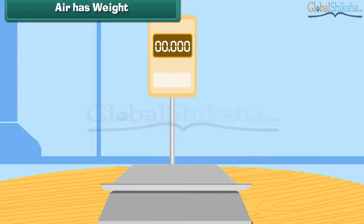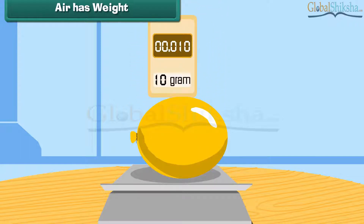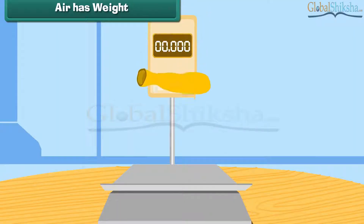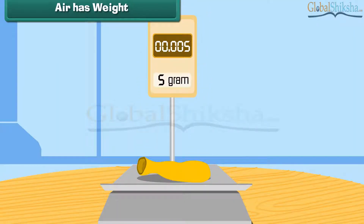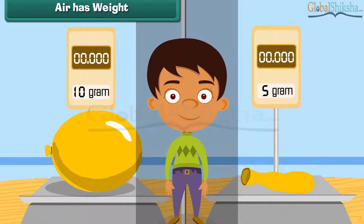Air has weight. Take an inflated balloon and weigh it. Now remove the air and deflate the balloon, then weigh it once more. What do you find? The balloon had more weight when it was inflated. This proves that air has weight.